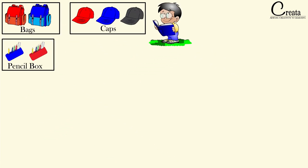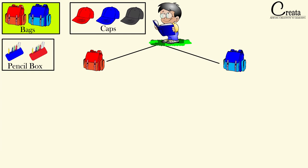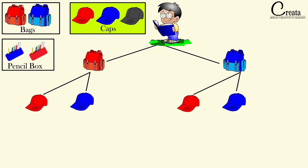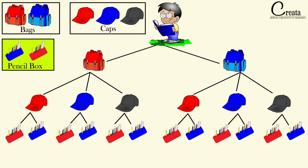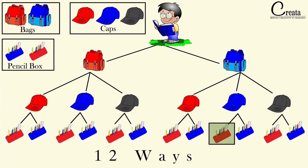Following the chart diagram: the student has 2 bags, so he can choose either the red bag or the blue bag. With each bag, he can take a combination of 3 caps — red cap, blue cap or black cap. Further, with each of these combinations, he can also combine a pencil box — red box or blue box. So with each combination we can form 2 pencil box combinations. In totality, we get 12 ways or 12 combinations from these 3 items.